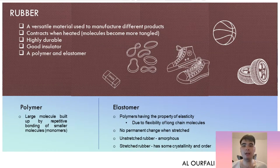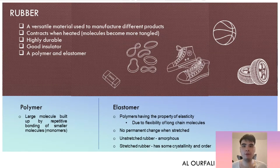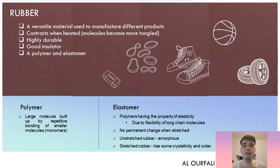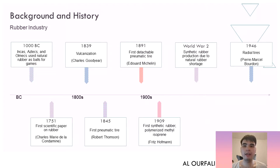A polymer is a large molecule built by repetitive bonding of smaller molecules called monomers. An elastomer is a polymer that has the property of elasticity due to the flexibility of long chain molecules — no permanent change when stretched. Unstretched rubber is amorphous, while stretched rubber has some crystallinity and order.